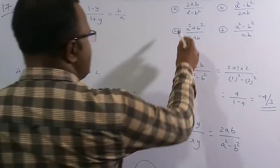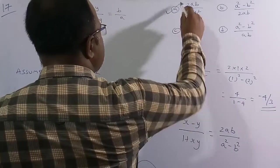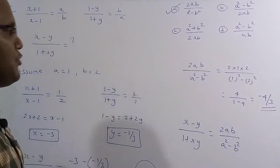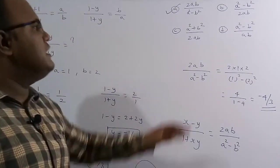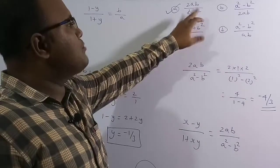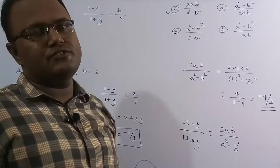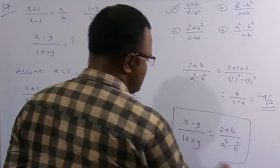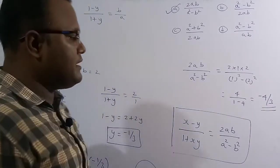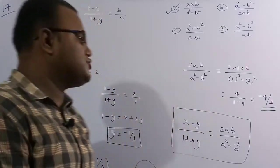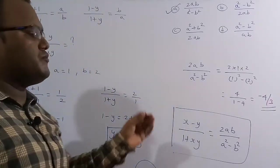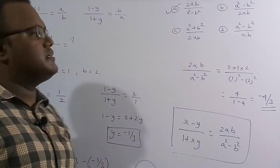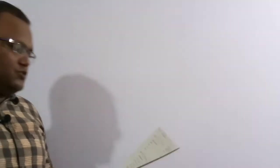Only option A gives the result −4/3; the remaining options do not satisfy. Therefore (x−y)/(1+xy) = 2ab/(a²−b²). By assuming values of a and b, we solved this problem in fewer steps.